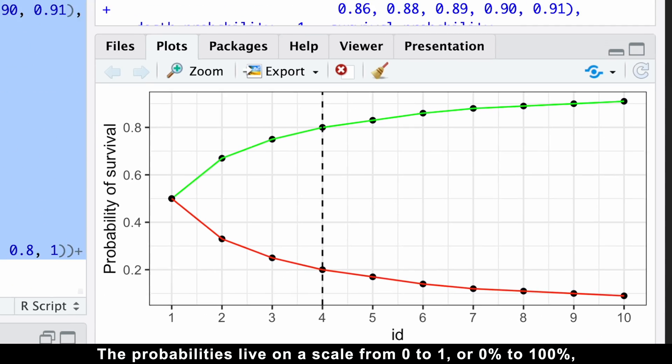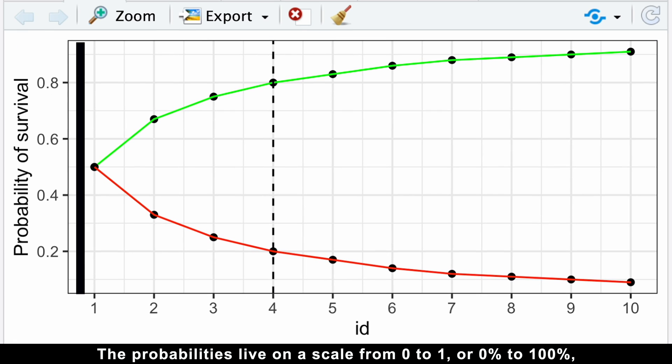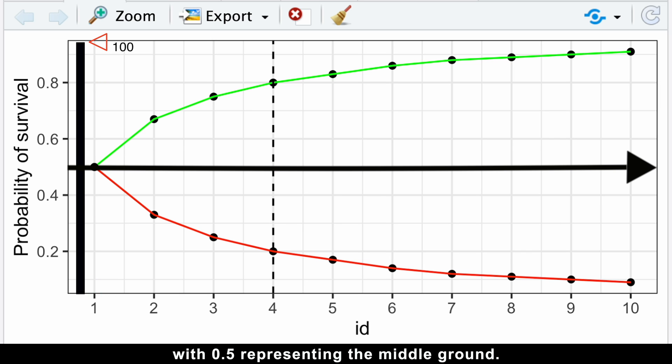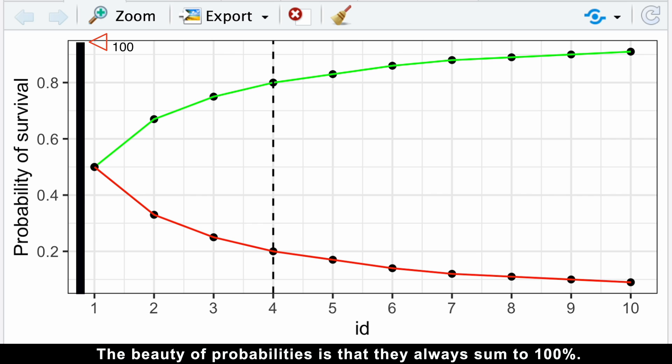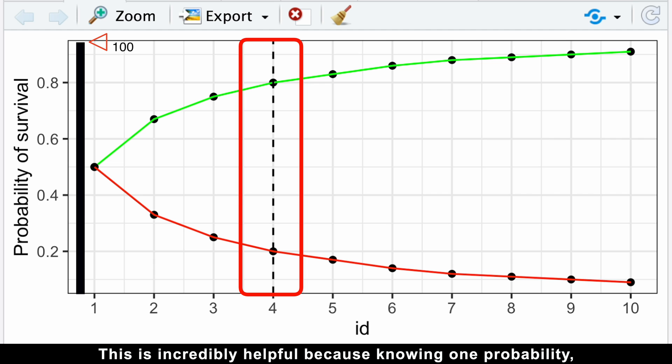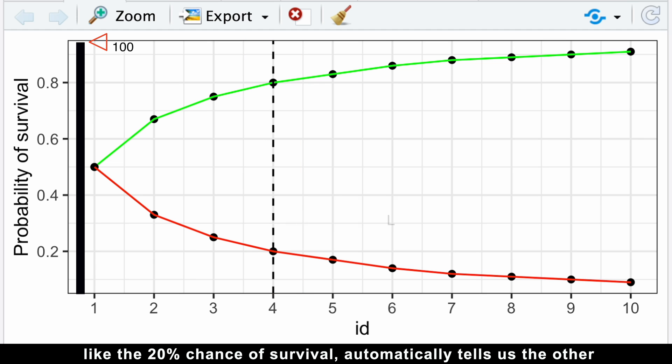The probabilities live on a scale from zero to one, or zero percent to one hundred percent, with 0.5 representing the middle ground. The beauty of probabilities is that they always sum to 100%. This is incredibly helpful because knowing one probability, like the 20% chance of survival, automatically tells us the other.